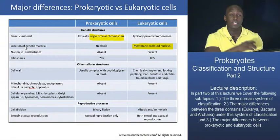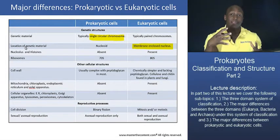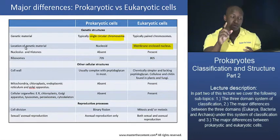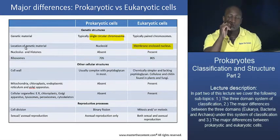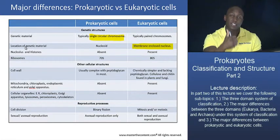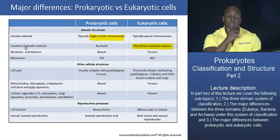A nucleolus is basically a round body found inside the nucleus of a eukaryotic organism. This structure is important because it is where ribosomal synthesis takes place in eukaryotic cells — that's a key function to remember from basic biology.